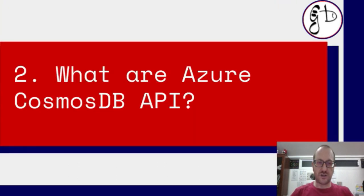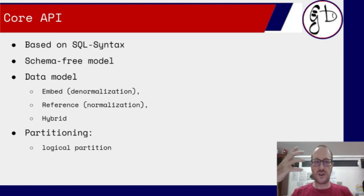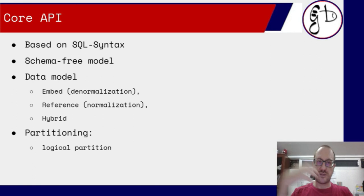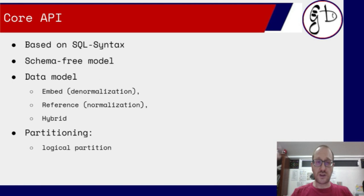What are the Cosmos DB APIs? Cosmos DB is based on five API models, which serve as the interface to communicate with or use the database. The first one is the Core API, which is based on SQL syntax — you get the classical SELECT, FROM, WHERE, and ORDER BY operations.